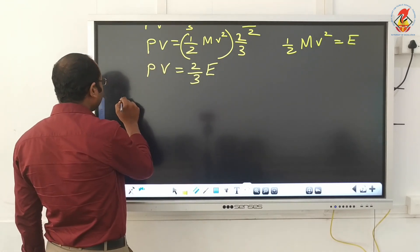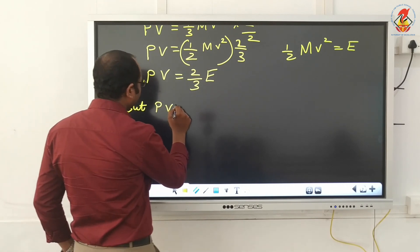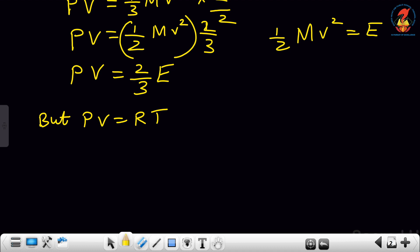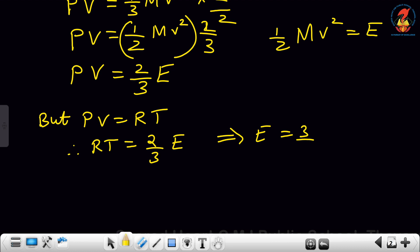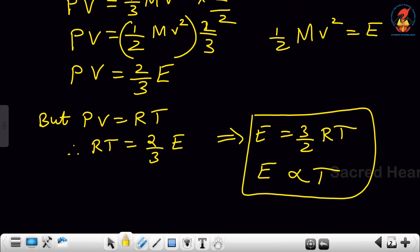For one mole of gas, PV = RT. Therefore RT = 2/3 E, which gives E = 3/2 RT. So the kinetic energy per mole of gas is directly proportional to absolute temperature: E ∝ T.